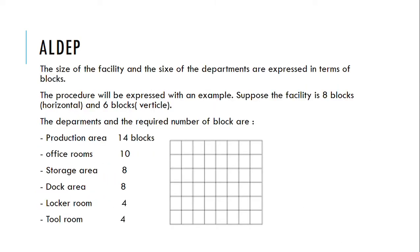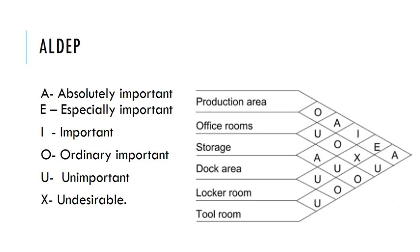For example, suppose the facility is 8 blocks by 6 blocks (vertical and horizontal). The required number of blocks for each department are: production area 14 blocks, office rooms 10 blocks, storage area 8 blocks, dock area 8 blocks, locker room 4 blocks, and tool room 4 blocks.